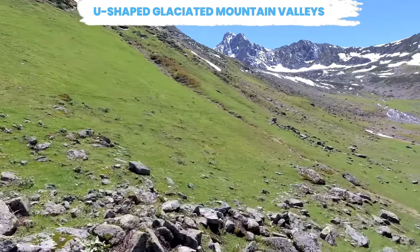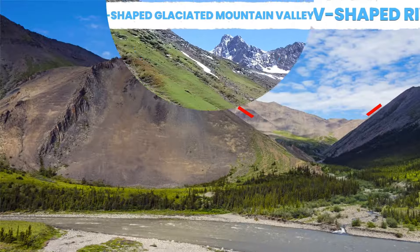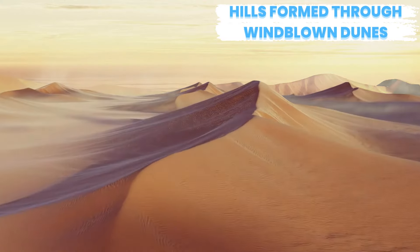For example, the U-shaped glaciated mountain valleys, the V-shaped river valleys, and hills formed through windblown dunes.